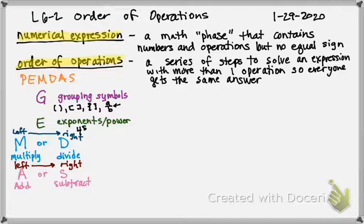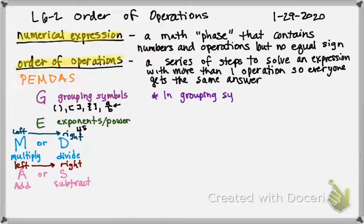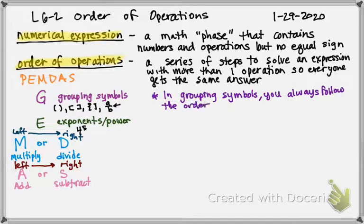Sometimes you have grouping symbols and inside the grouping symbols there are operations — one, two, whatever. When you have grouping symbols, you always follow the order of operations inside them. So let's do an example problem, and I'm going to give you a doozy just to start us off.